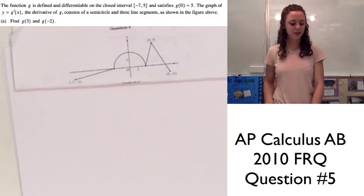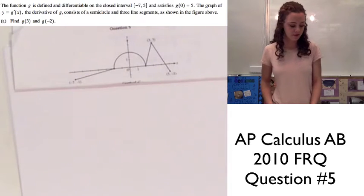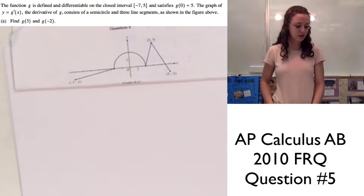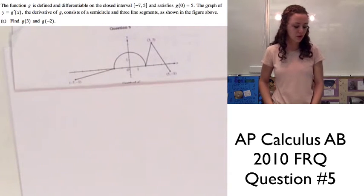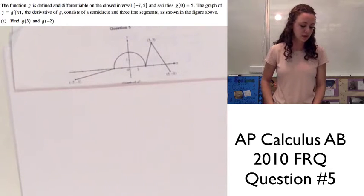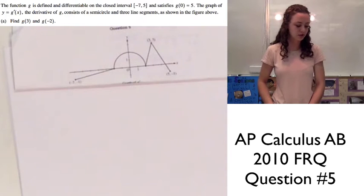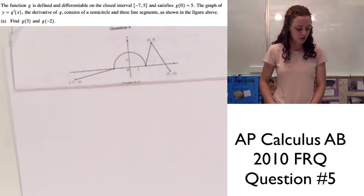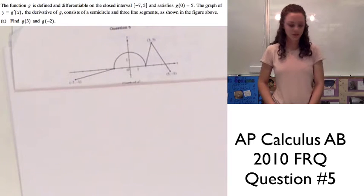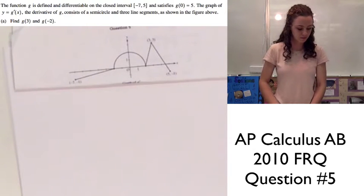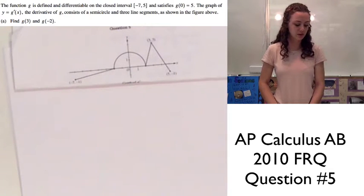Today I'll be doing question number 5 from the 2010 AP Calculus Test. It says: the function g is defined and differentiable on the closed interval negative 7 to 5. The graph of y equals g prime of x, which is the derivative of g, consists of a semicircle and three line segments, as shown in the figure above.